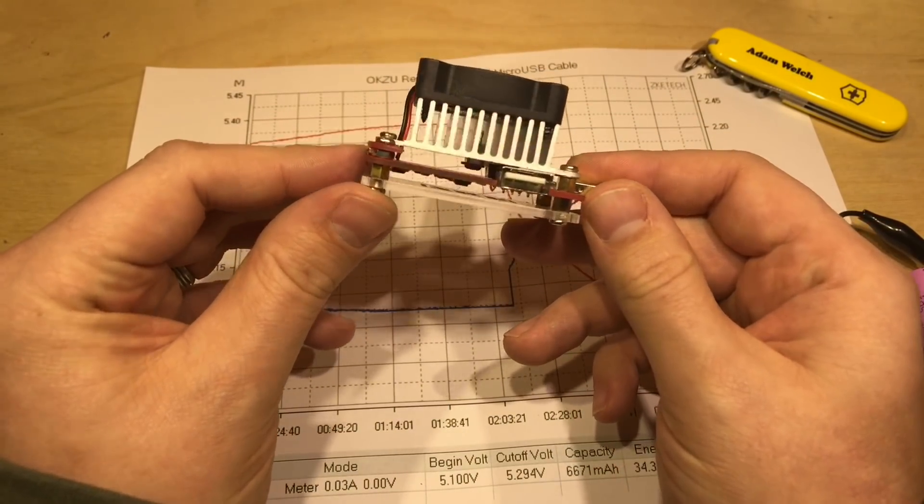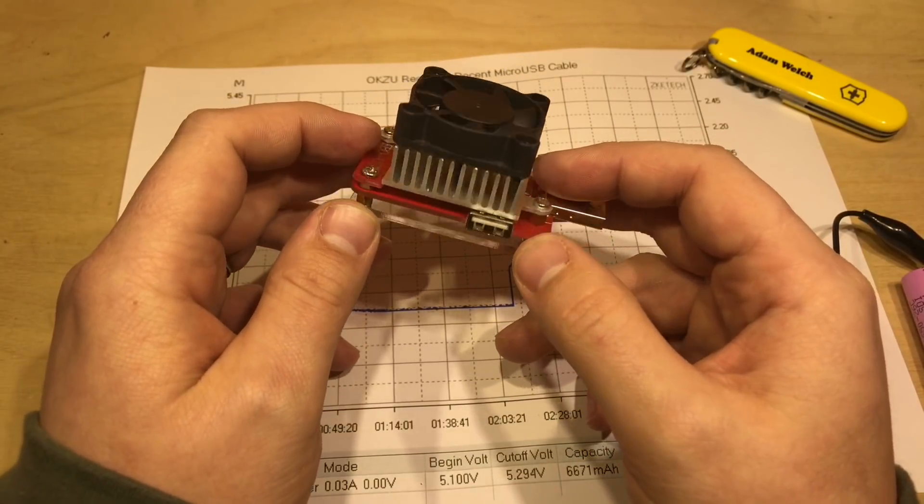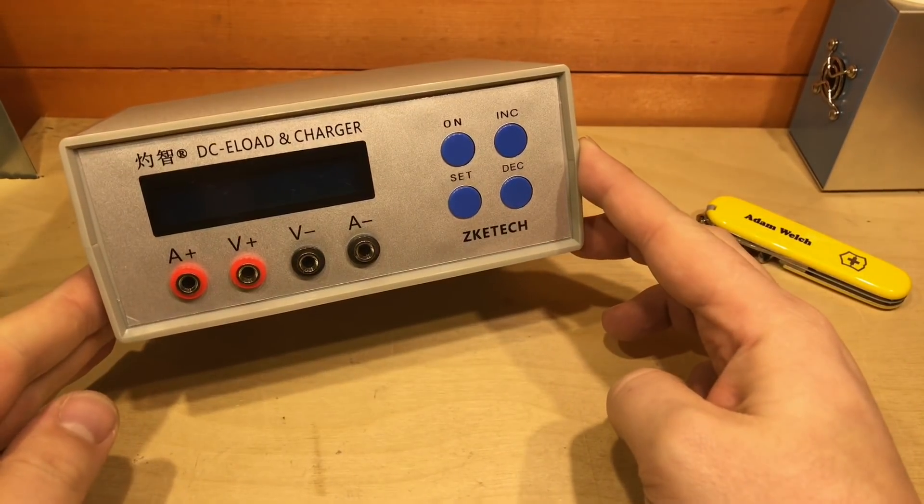But this particular unit does have some limitations. 25 watts absolute maximum, but it can go up to 13.5 volts and 4 amps. But I wondered if there was something a bit bigger that might be useful here in the shed. And then I found the same company, ZKE Tech, make this.